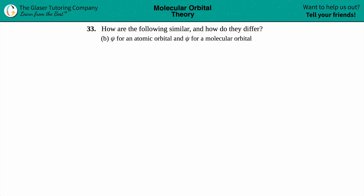Number 33, how are the following similar and how do they differ — letter b. We have this notation, a weird notation called a wave function. Whenever you see this symbol in chemistry and in physics, it is represented as a wave function. We just have to talk about what makes a wave function for an atomic orbital and a wave function for a molecular orbital similar and what represents the difference.